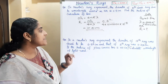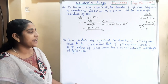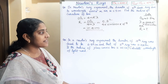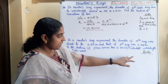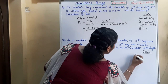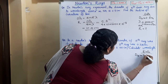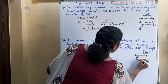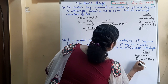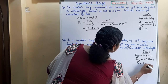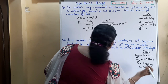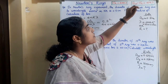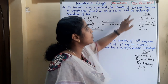Second question. In a Newton's ring experiment, the diameter of the 15th ring was found to be 0.59 cm and that of the 5th ring was 0.336 cm. If the radius of the plano-convex lens is 100 cm, calculate the wavelength of light used. Since two diameters corresponding to two orders are given, we use the formula d²_(m+p) − d²_m = 4pRλ.